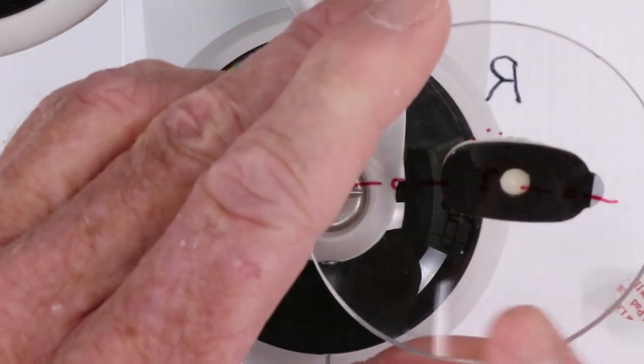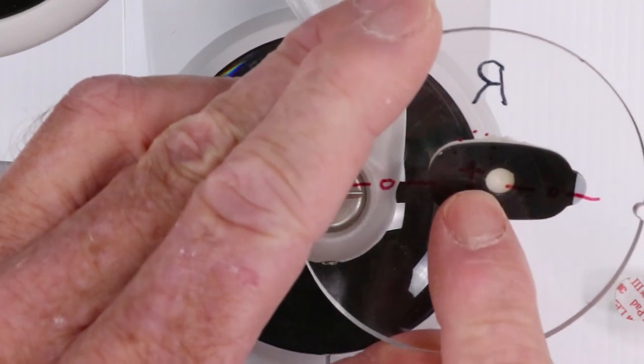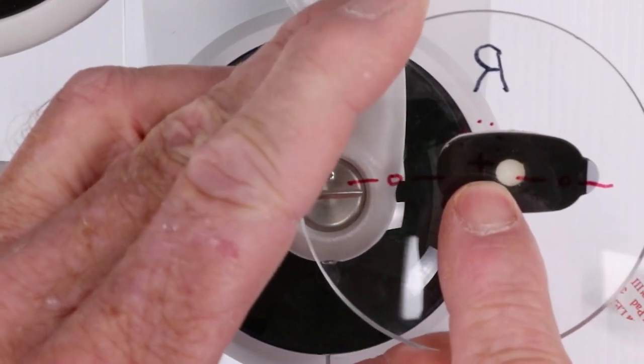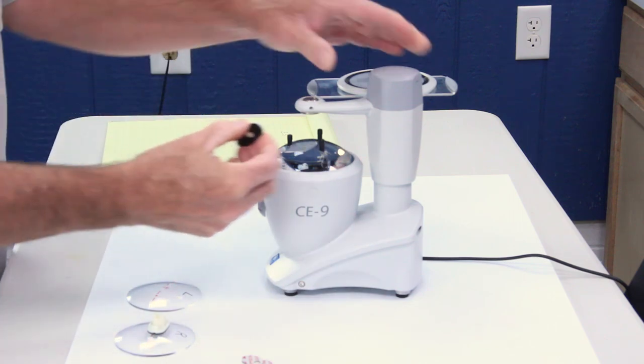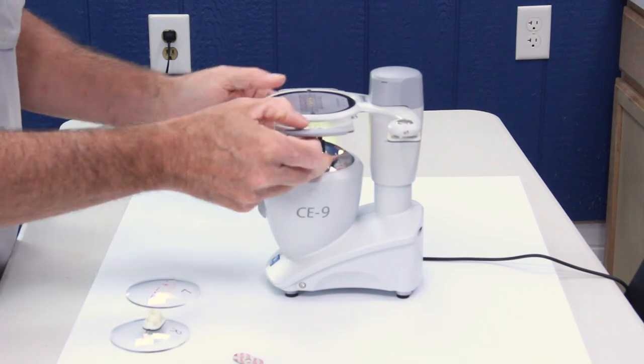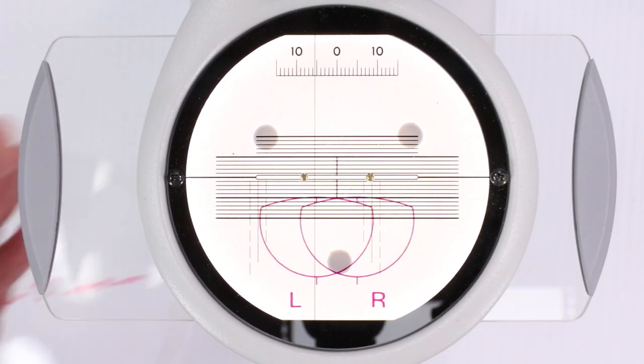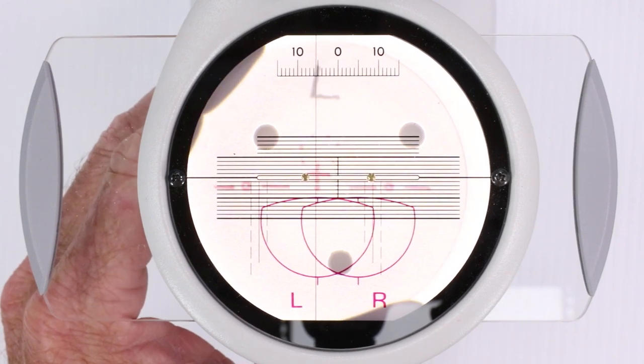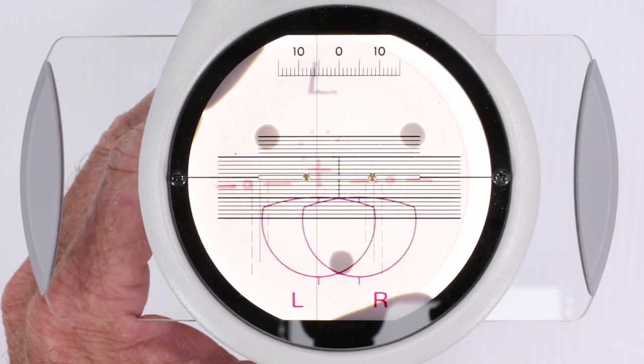Looking at that, that would be over and up because everything is working off, of course, of that fitting cross. And for our left, five and a half over and one and a half up. Five and a half over and one and a half up.